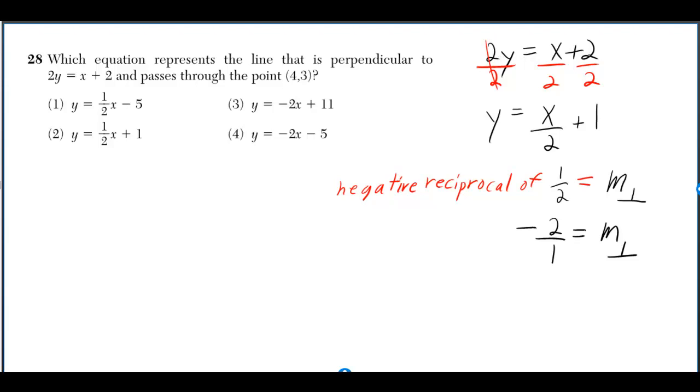If you have 2y is equal to x plus 2, you can solve it for y by dividing every piece here by 2. So you get y is equal to x over 2 plus 1.